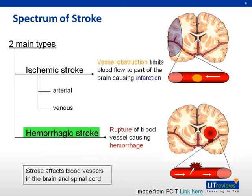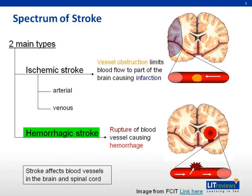Hemorrhagic stroke, or cerebral hemorrhage, accounts for about 10% to 15% of all strokes. This is caused by a rupture of a blood vessel. These may be related to hypertension, aneurysm, or arteriovenous malformation. Hemorrhage may be inside the brain parenchyma, that is intracerebral, or outside the brain parenchyma, such as a subarachnoid hemorrhage.